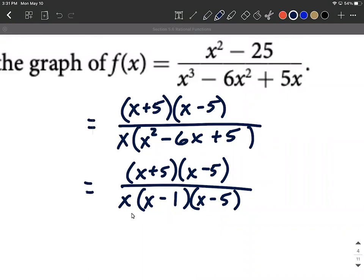All right, as far as the domain goes, I wouldn't want to plug in a 0, a 1, or a 5, or else they would make the denominator equal 0. So none of those values are in the domain. I do notice in this that we have an x minus 5 in the numerator and an x minus 5 in the denominator as a common factor.